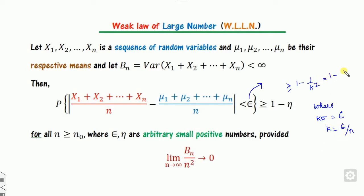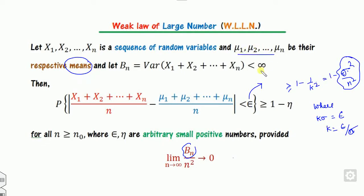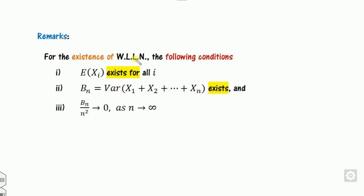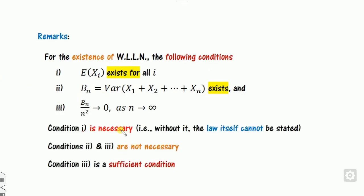You can prove this using the Chebyshev inequality: 1/k², where k*sigma = epsilon and k = sigma/n. Substituting gives sigma²/n², which is b_n/n², and this goes to 0 when b_n/n² approaches 0. Note the three main conditions: existence of respective means, the finiteness condition, and b_n/n² → 0. The first condition is necessary, while the third is only sufficient.